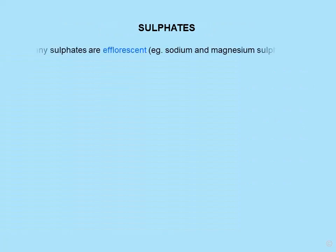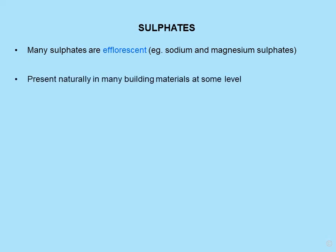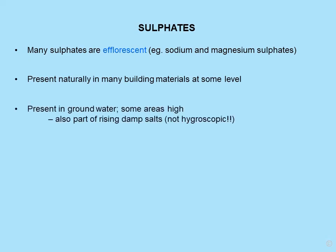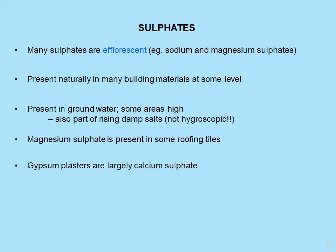Sulfates: many sulfates are efflorescent — sodium and magnesium sulfates are present naturally in many building materials, especially older buildings. They are also present in groundwater in some areas, are part of rising damp problems, and are not usually hygroscopic. Magnesium sulfate — Epsom salts — is present in some roofing tiles. Gypsum plasters are largely calcium sulfate, and they can cause sulfate attack on newly applied cement renders and plasters.